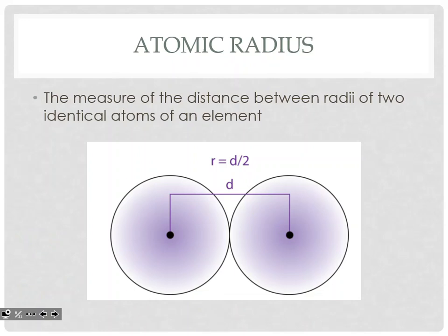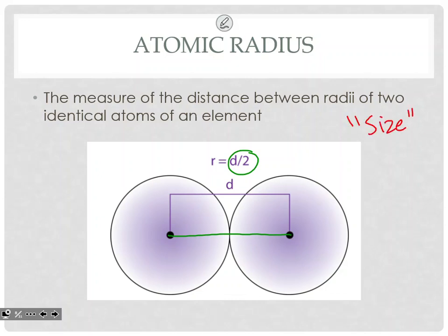Atomic radius is a measure of the distance between the radii of two identical atoms of an element. They don't calculate it based off the radius of one single atom — they actually put two of them together, get the diameter distance from nucleus to nucleus, and then divide it by two. It gets them the correct measure of how large the atom actually is. So for all intents and purposes, when we're referring to radius, we're basically talking about the size of the atom.